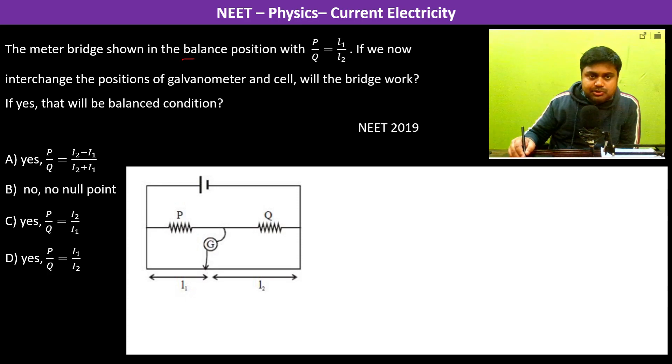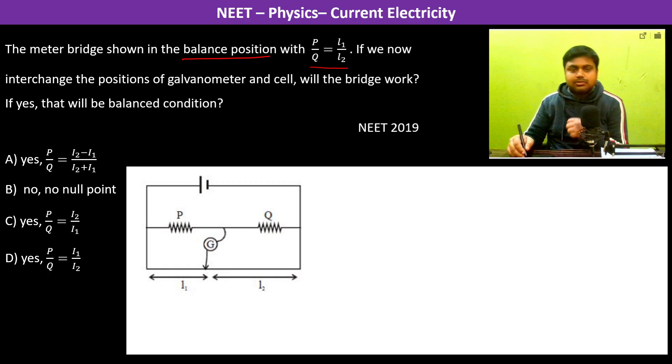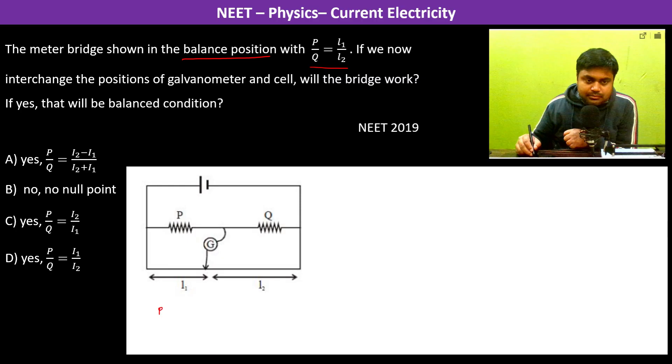The meter bridge is in the balanced position with P by Q equals L1 by L2. This is the balanced position and P by Q is going to be equal to the resistance on this side which is R1 by R2.